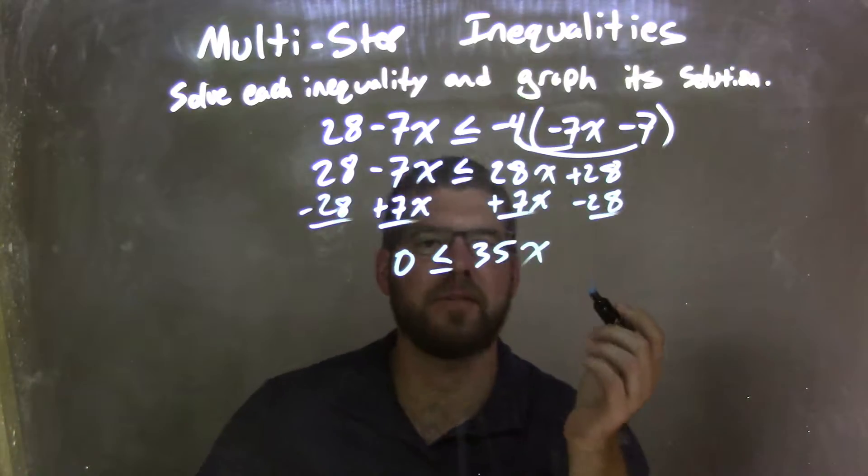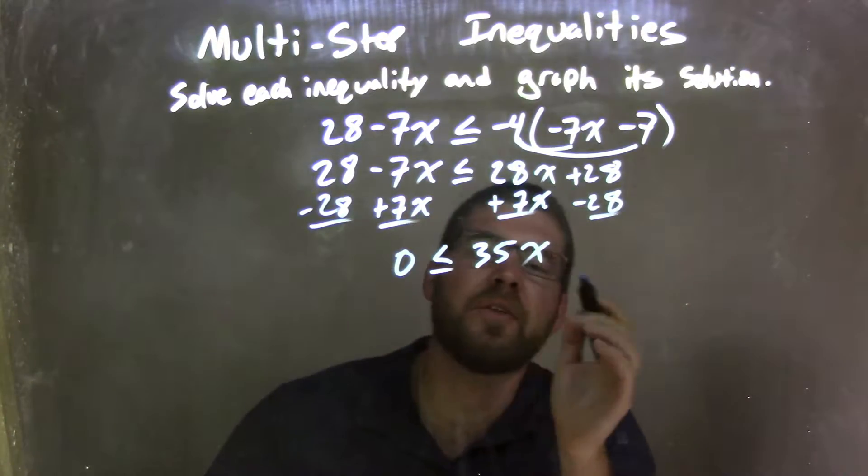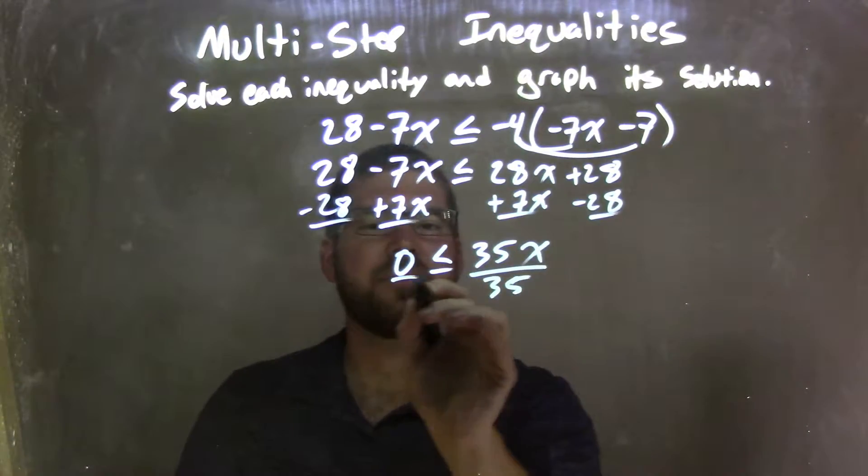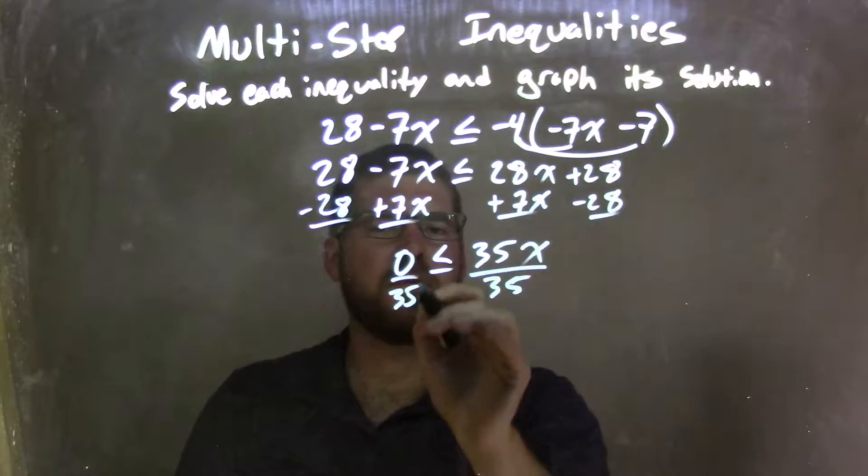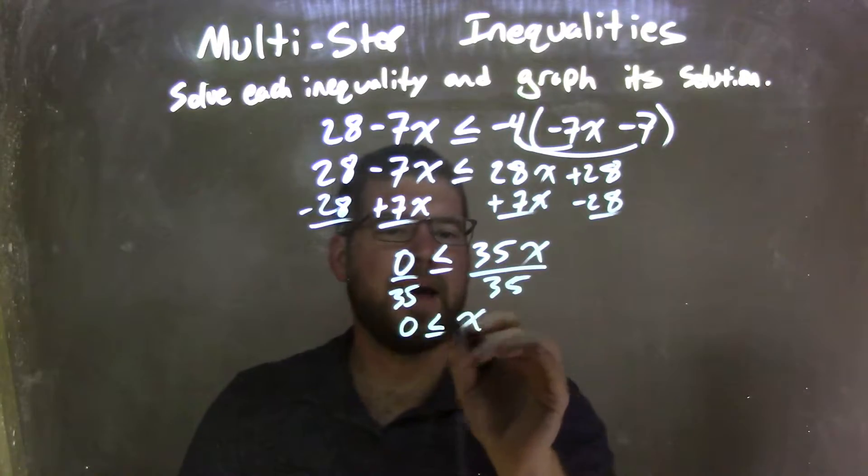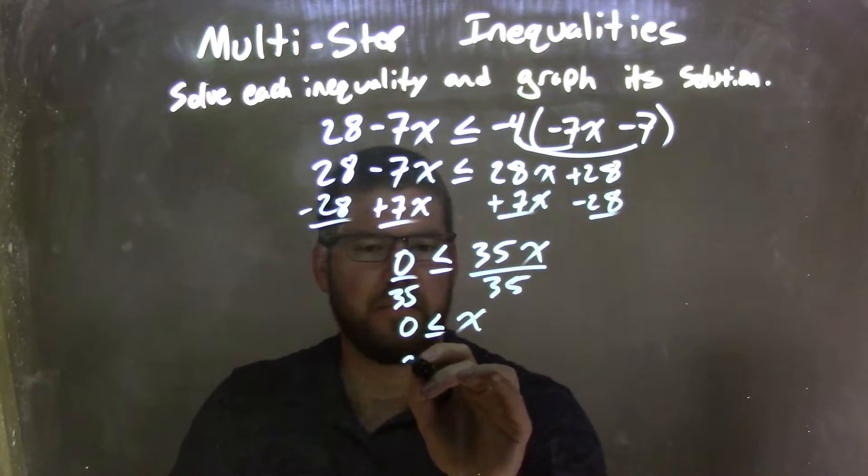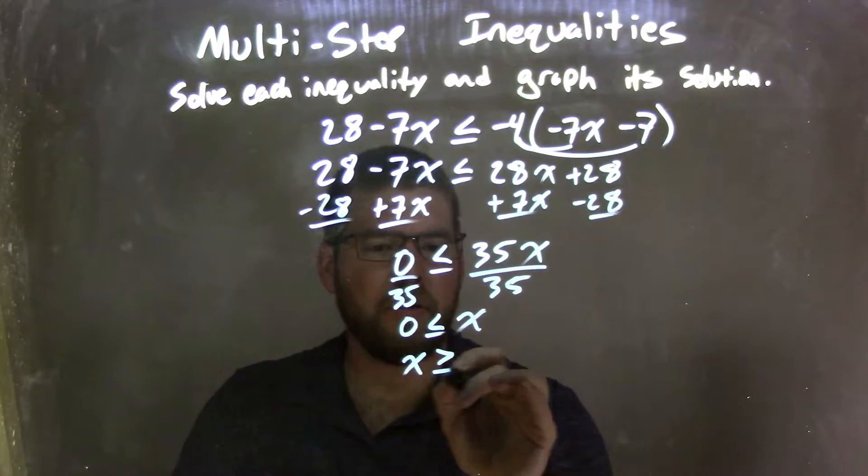So now, we have 0 is less than or equal to 35x. I'm going to divide both sides by 35. 0 divided by 35 is 0. So 0 is less than or equal to x. I'm going to rewrite this so x comes first. So we have x is greater than or equal to 0.